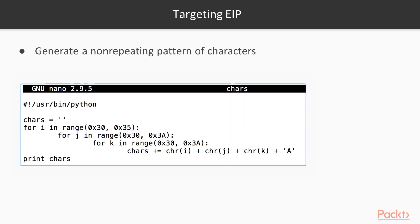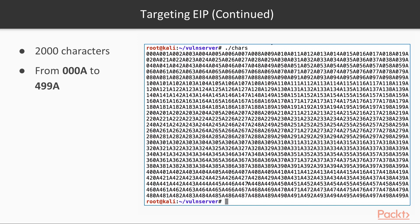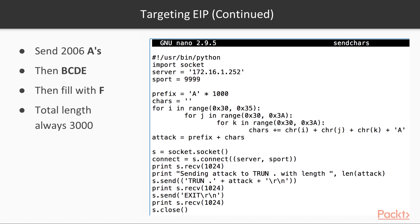To find out exactly which of the capital A's ended up in the instruction pointer, we need a non-repeating pattern of characters. Here's one way to do it with three Python loops: one that goes from ASCII 0 to 4, one from 0 to 9, and another from 0 to 9 — producing a pattern of 2000 non-repeating strings, 32 bits long: 000A, 001A, 002A, up to 499A. We can make a version of the previous program that sends 1000 capital A's and then that non-repeating 2000-character sequence, for a total of 3000 characters.